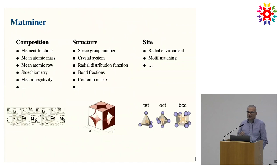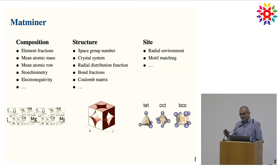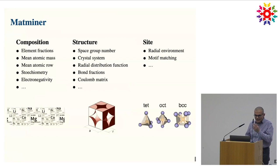In MatMiner, which is an open library, you can get features about the composition — element fraction, mean atomic mass, and so on — about the structure — space group, crystal system, radial distribution function — and about the local site environment, such as whether it's a tetrahedral environment, BCC, or whatever. That's a huge number of features.